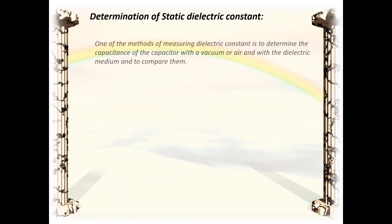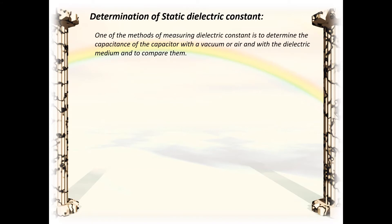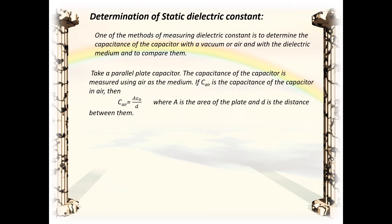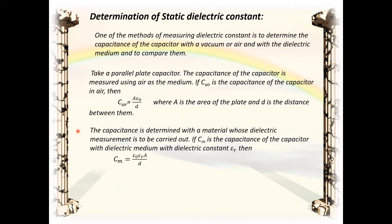One method of measuring the dielectric constant is to determine the capacitance of a capacitor with vacuum or air and with the dielectric medium and compare them. Take a parallel plate capacitor. The capacitance in air is C_r equal to A into epsilon_0 divided by D, where A is the area of the plates and D is the distance between the plates. Then the capacitance with a dielectric medium of constant epsilon_r is C_m equal to epsilon_0 epsilon_r A divided by D. Taking the ratio, C_m divided by C_r equals epsilon_r, giving the static dielectric constant.